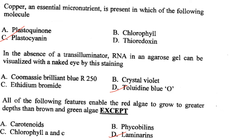All of the following features enable red algae to grow at greater depth than brown and green algae except laminarins. Laminarins are usually found in brown algae, not red algae. Answer is option D.